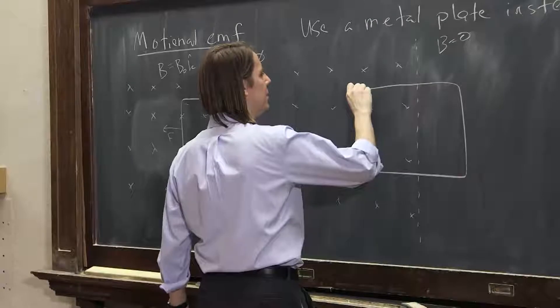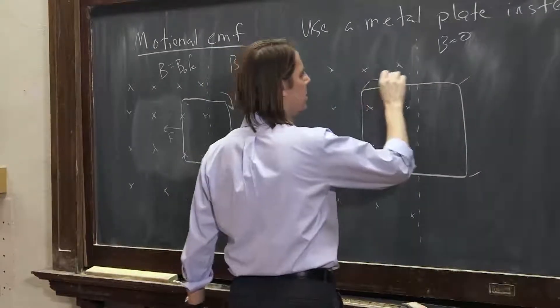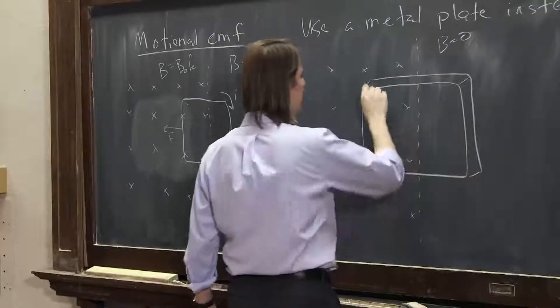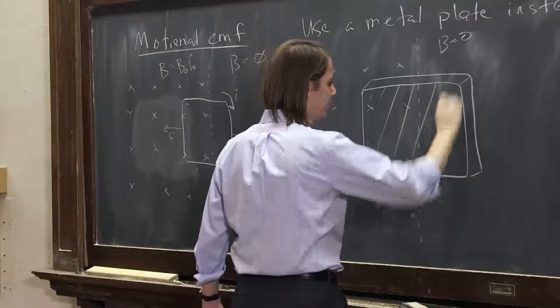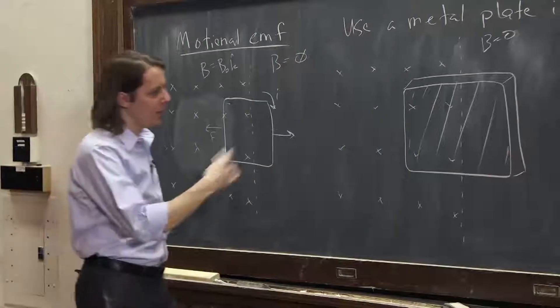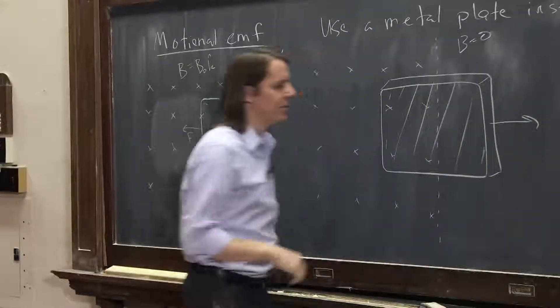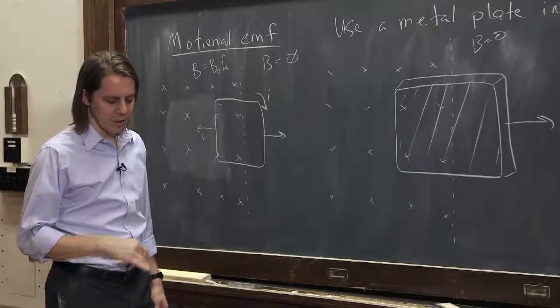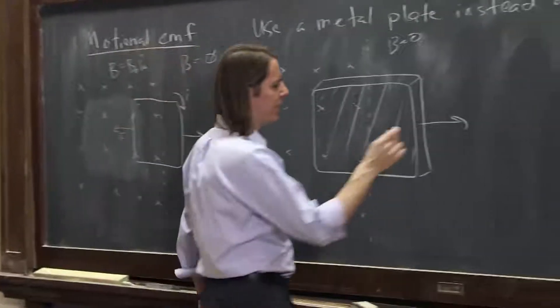It's a big, whomping chunk of metal, crosshatch it to make it clear. That's a solid, heavy thing. We're going to drag this big piece of metal and pull it, give it some velocity going out of the board, or out of the B field.